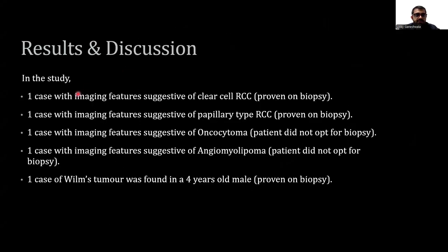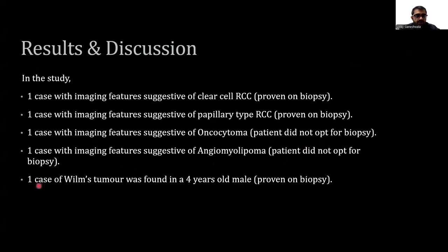Results and discussion. In this study: one case with imaging features suggestive of clear cell type RCC was proven on biopsy; one case with imaging features suggestive of papillary type RCC was also proven on biopsy; one case with imaging features suggestive of oncocytoma in which the patient did not opt for biopsy; one case with imaging features suggestive of angiomyolipoma in which the patient did not opt for biopsy; and one case of Wilms tumor was found in a four-year-old male child, proven on biopsy. Thank you.